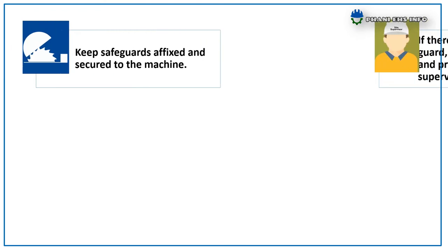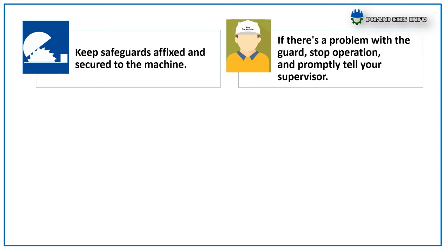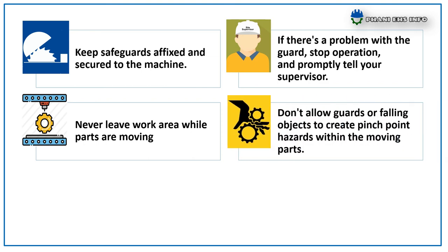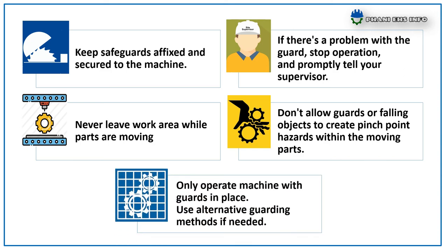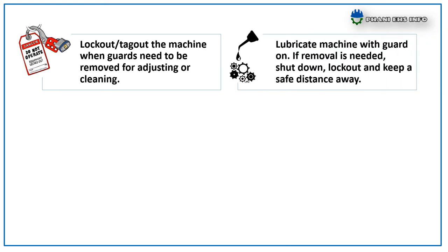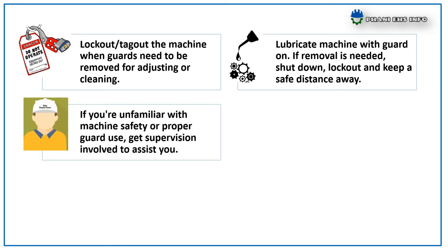Safety instructions for handling machinery: keep safeguards affixed and secure to the machine. If there is a problem with the guard, stop operation and promptly tell your supervisor. Never leave the work area while parts are moving. Don't allow guards or falling objects to create pinch point hazards within moving parts. Only operate the machine with guards in place; use alternative guarding methods if needed. Use lockout/tagout when the guard needs to be removed for adjusting or cleaning. Lubricate the machine with guards on; if removal is needed, shut down and lockout. If you are unfamiliar with machine safety or improper guard use, get supervision involved to assist you.